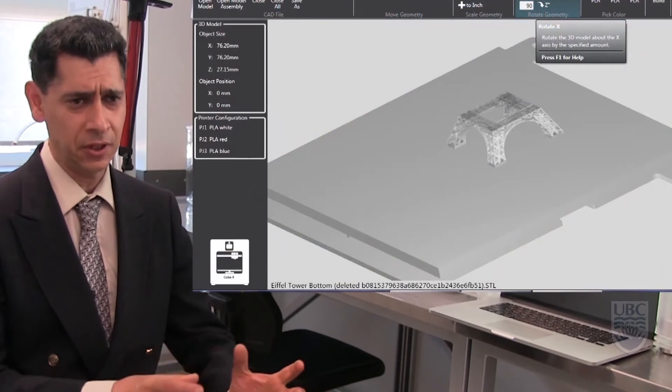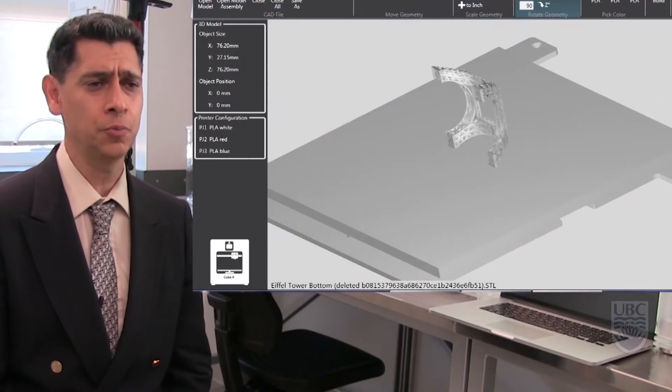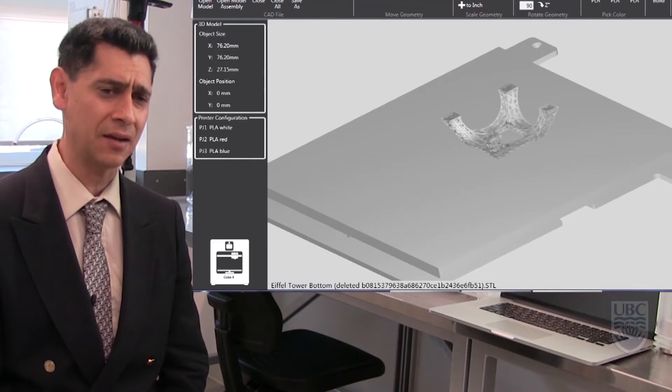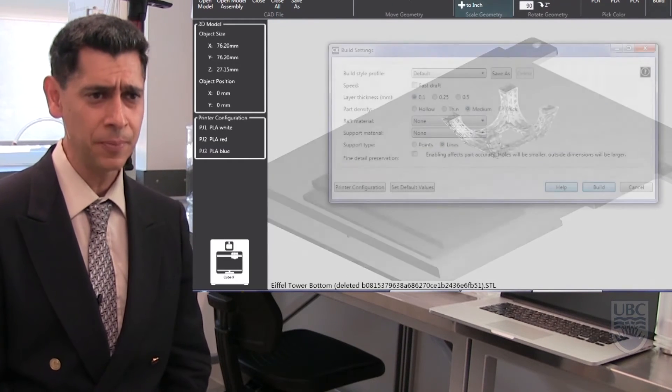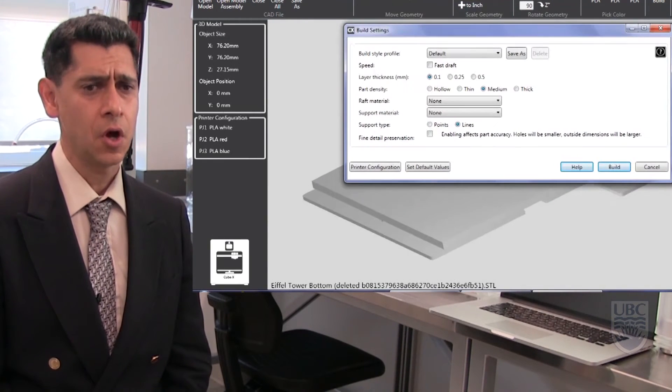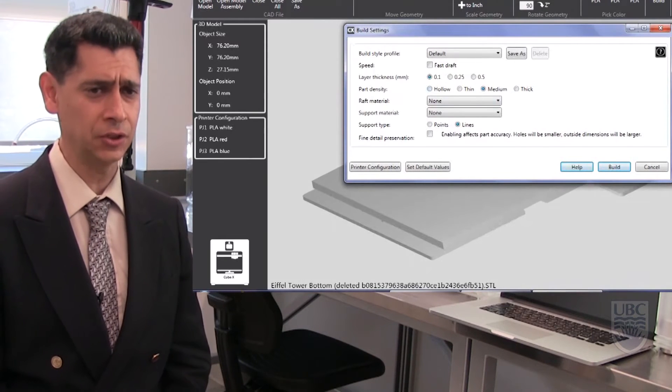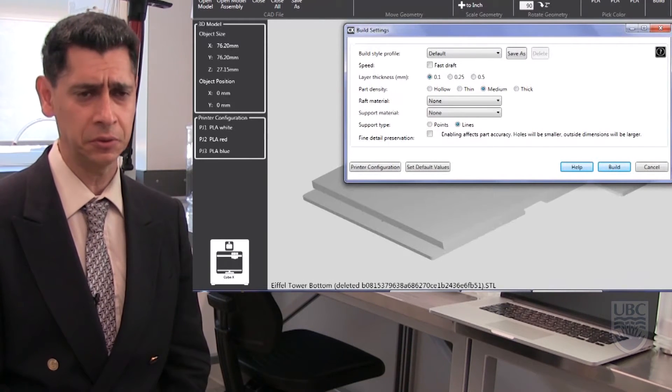As you can see, now I bring it to the CubeX. I can change the orientation as I mentioned that we have to print it upside down. There are several parameters that can be changed during the printing process, including the speed,